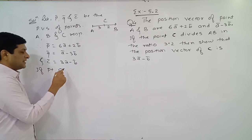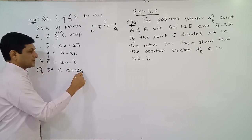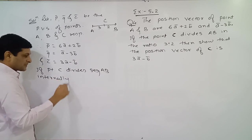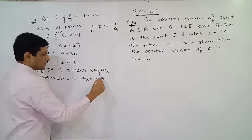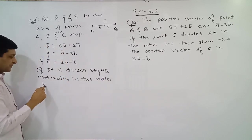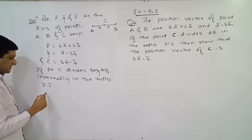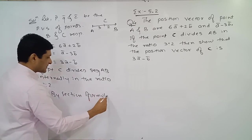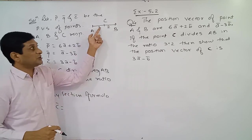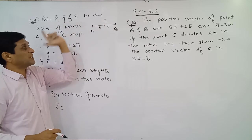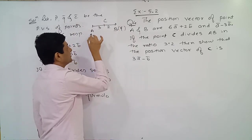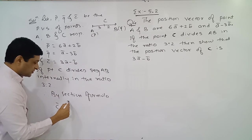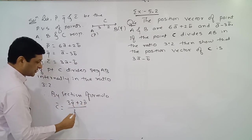If point C divides segment AB internally in the ratio 3:2, then by the section formula, C̄ will be equals to 3Q̄ plus 2P̄ upon 3 plus 2, which equals 3Q̄ plus 2P̄ divided by 5.